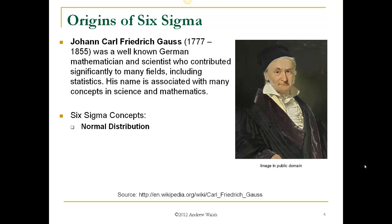Johann Carl Friedrich Gauss is a very well-known German mathematician and scientist who contributed to many, many fields. Most of us know a lot about him, and he also contributed to statistics. His name is associated with many concepts in science and mathematics, and the Six Sigma concept we owe to him is normal distribution.